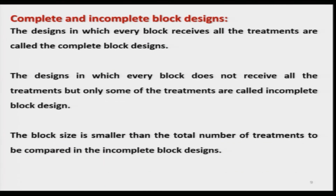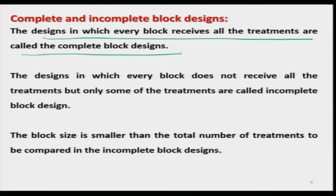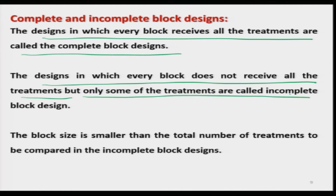The designs in which every block receives all the treatments are called complete block designs. The designs in which every block does not receive all the treatments but receives only some of them are called incomplete block designs. The block size is smaller than the total number of treatments in the case of incomplete block design.